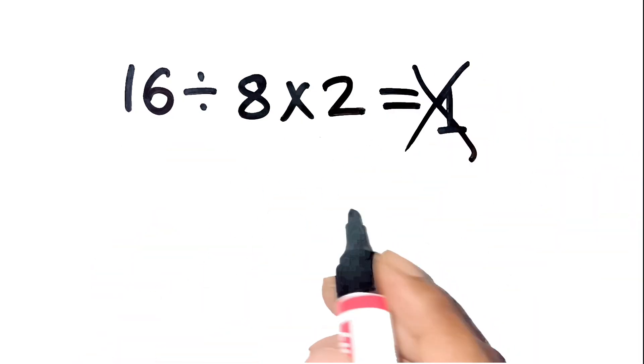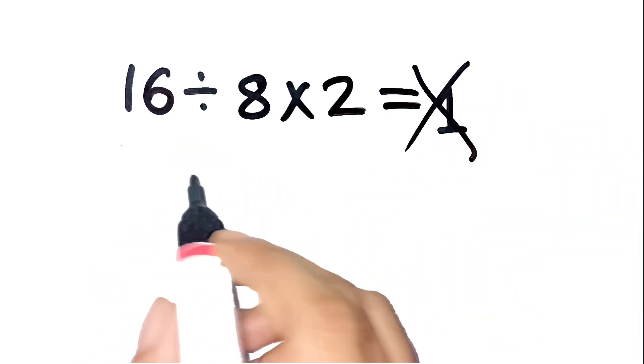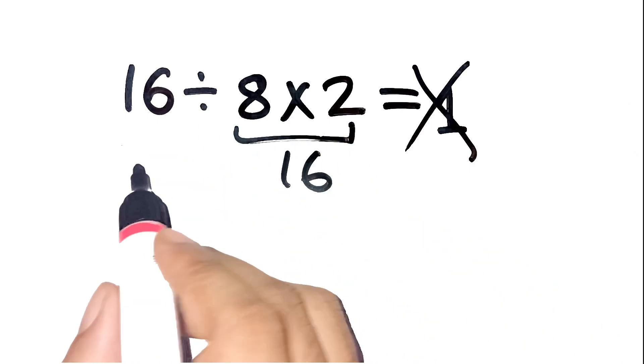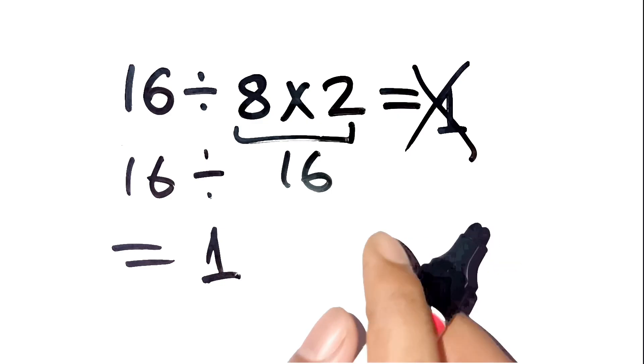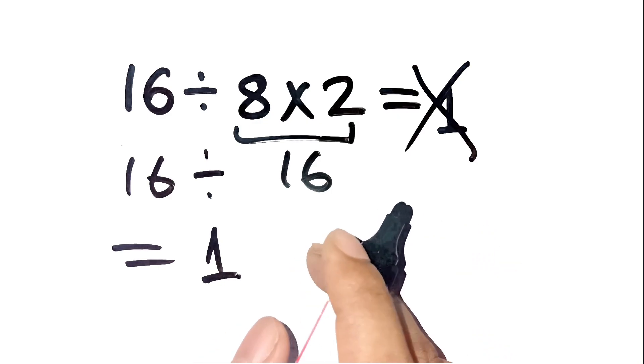I know exactly why you thought that. You probably did this in your head. 8 times 2 is 16, then 16 divided by 16 is 1. Sounds simple, right? But that's exactly where most people make the mistake.